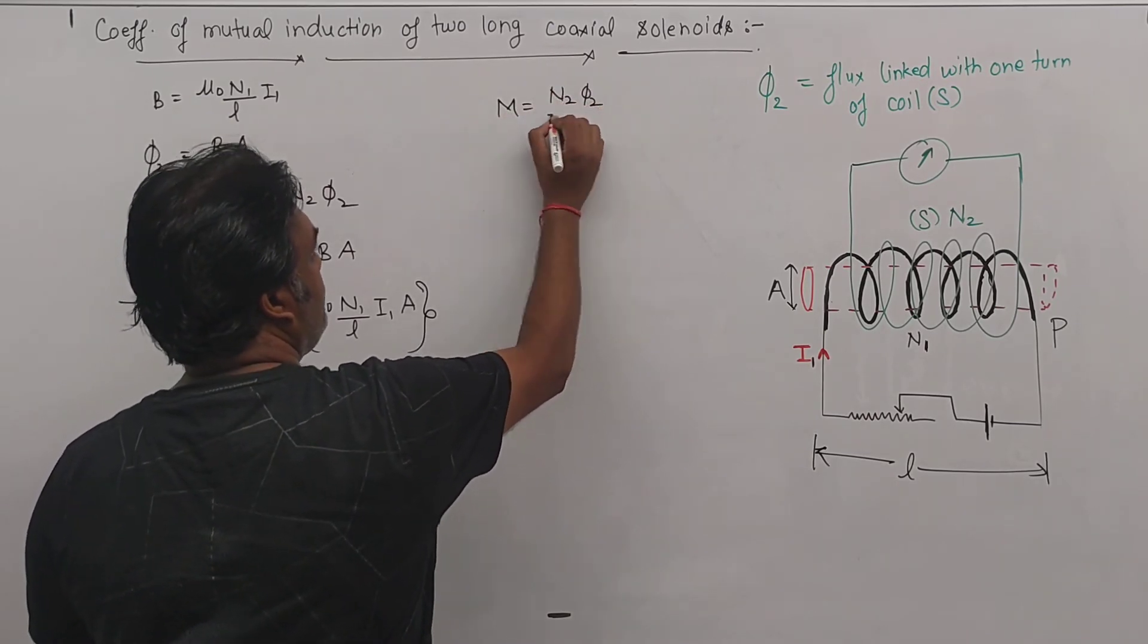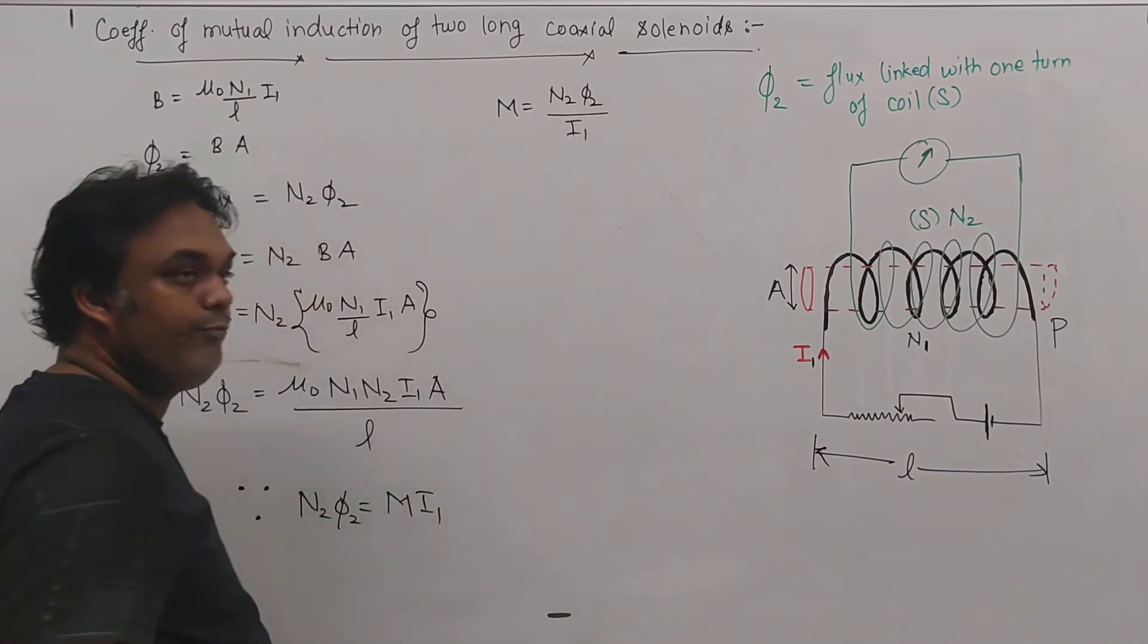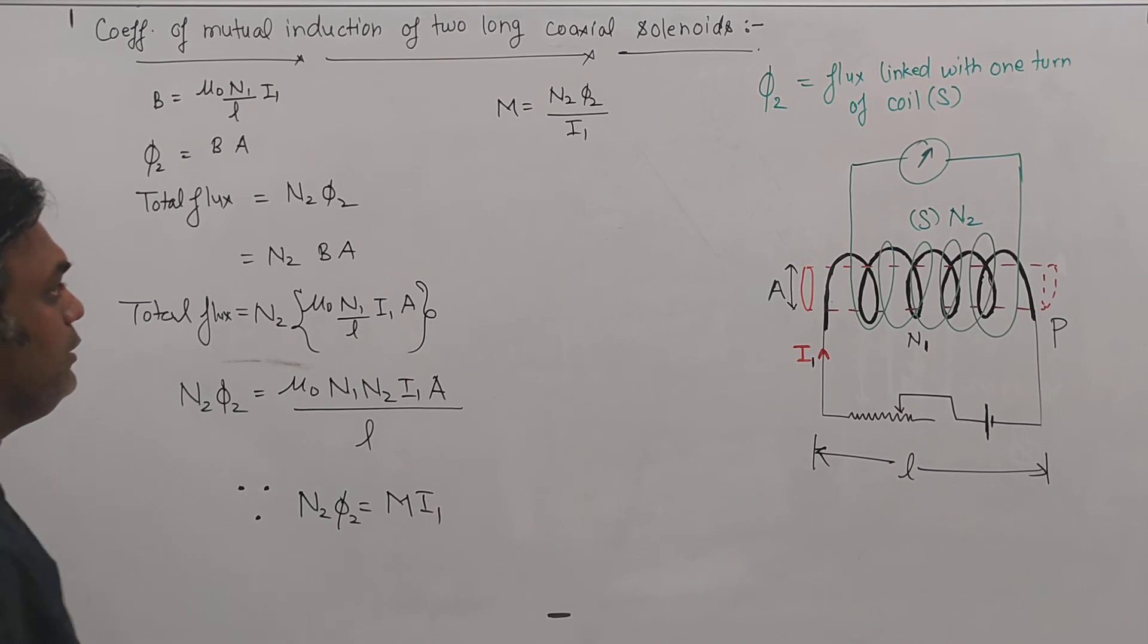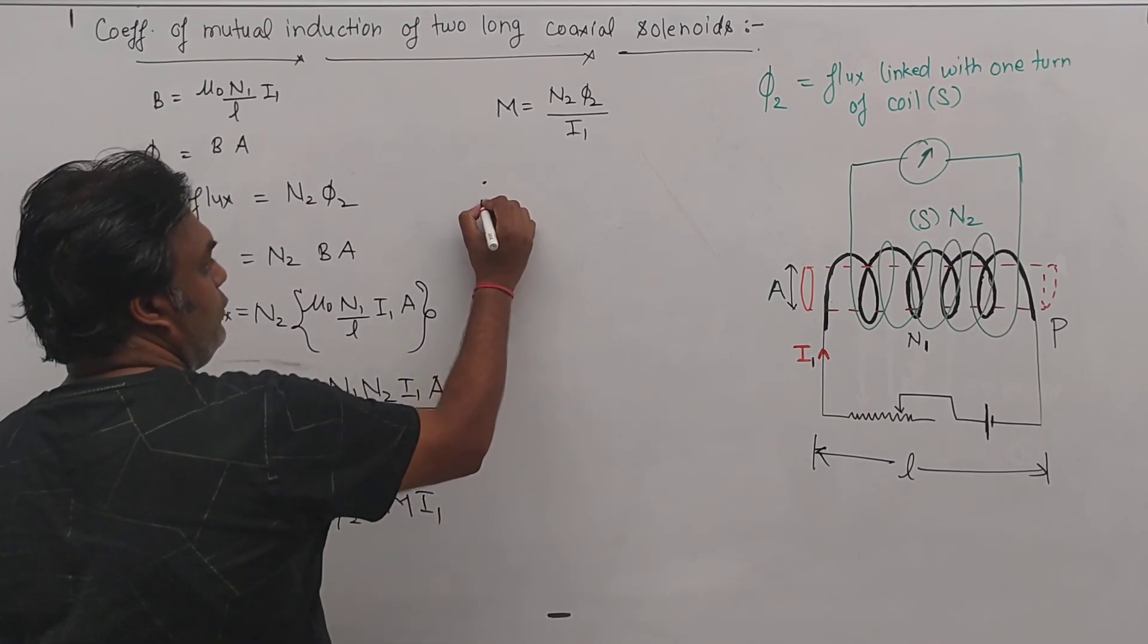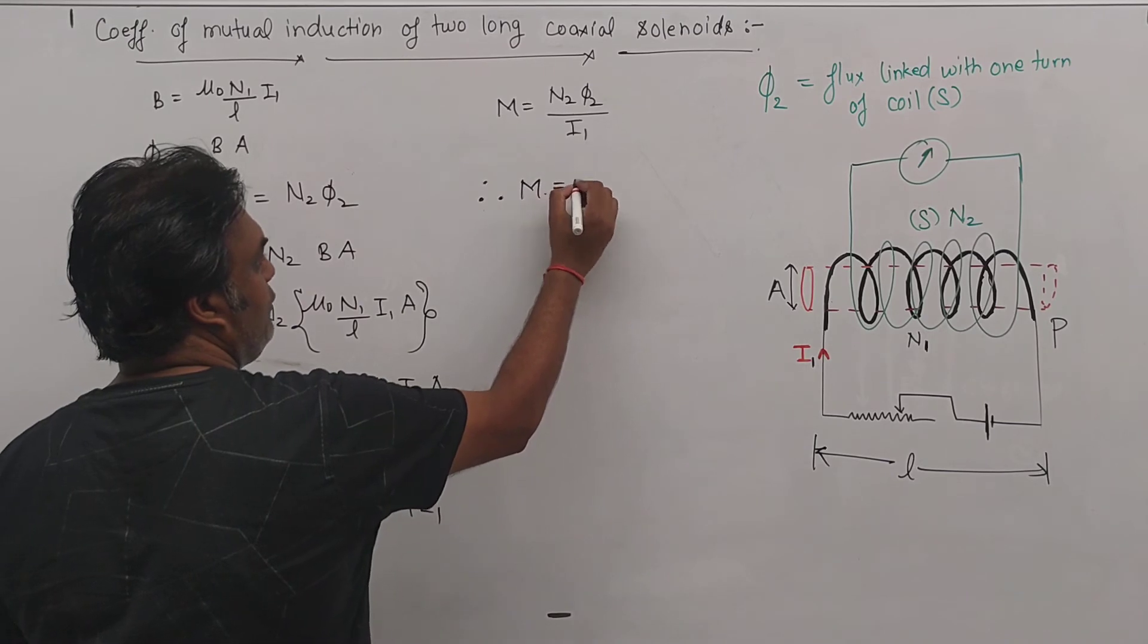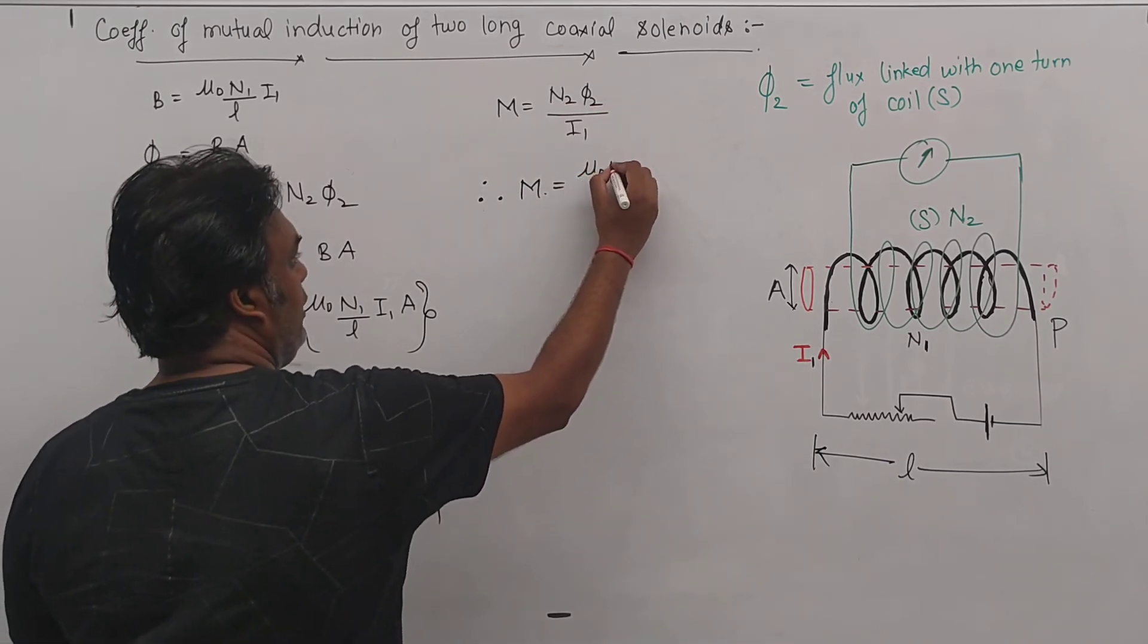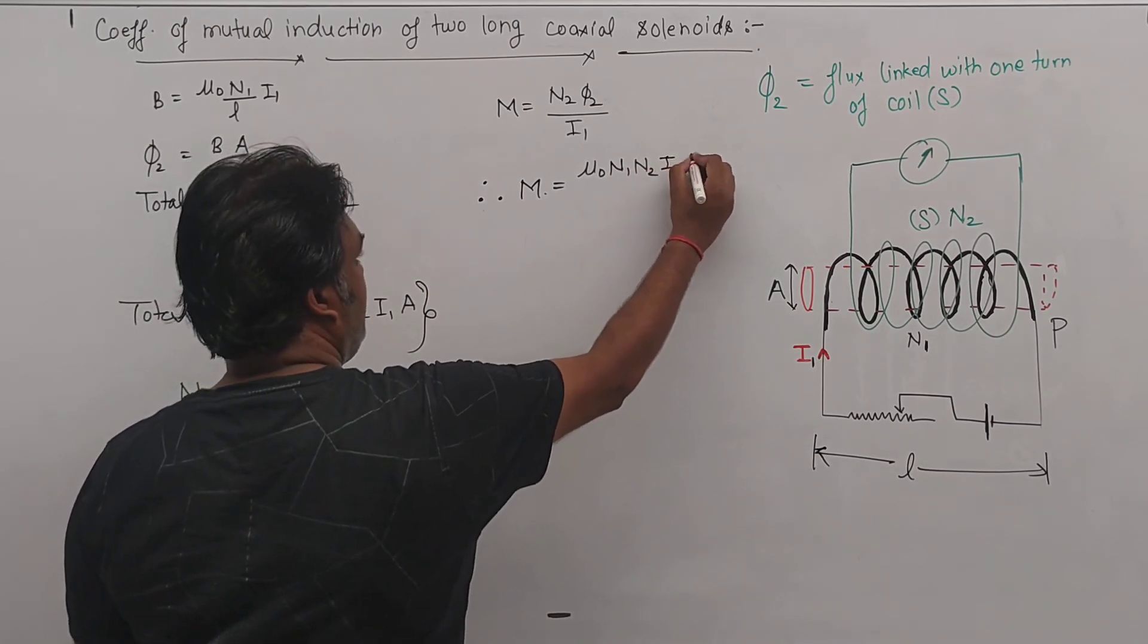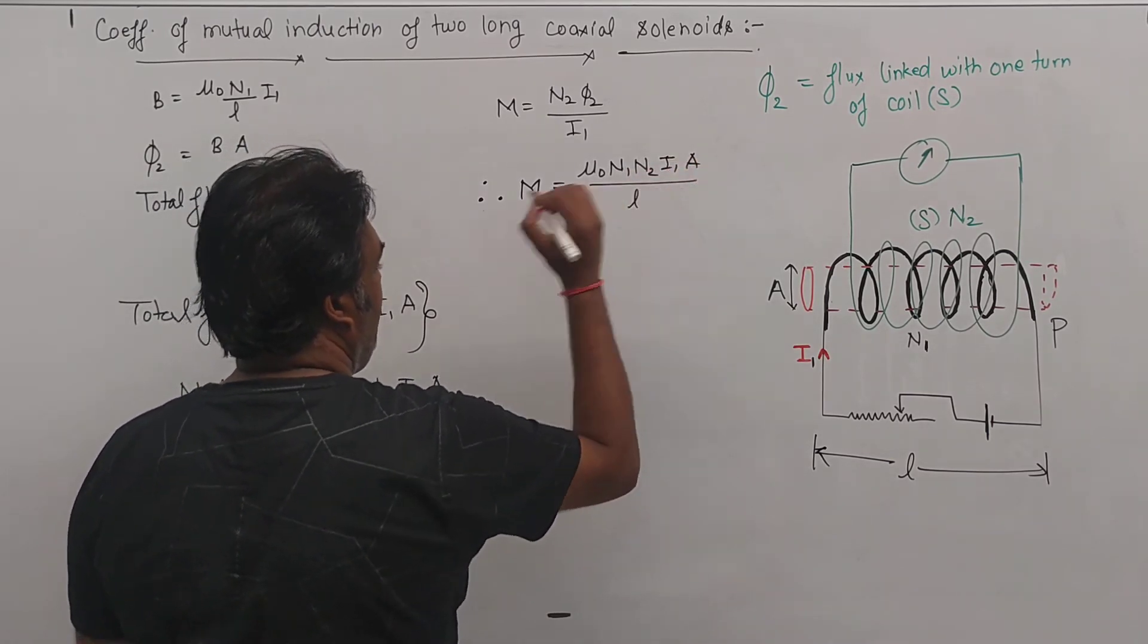n2φ2 / i1. See here, n2φ2 is there, here i1 is there. So therefore M is equal to, substituting the value of n2φ2, that is μ₀n₁i₁A/l.